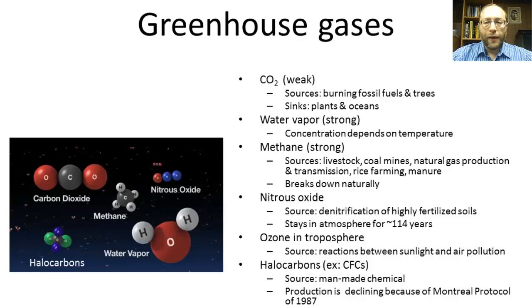In addition, coal mines produce methane, as well as natural gas production and transmission, which release methane. Methane breaks down naturally, so it doesn't remain in the atmosphere anywhere near as long as carbon dioxide. The same doesn't hold true for nitrous oxide, which can stay in the atmosphere for about 114 years. Its main sources are the denitrification of highly fertilized soils by bacteria, and also the burning of fossil fuels.